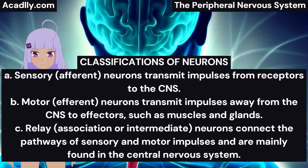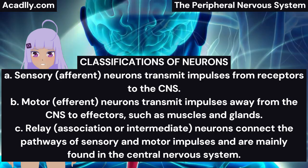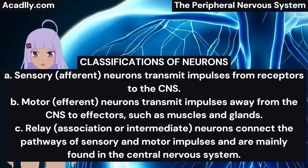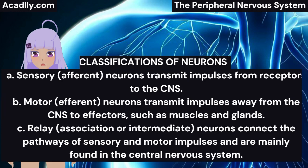Classifications of Neurons. Neurons are commonly classified according to their functions in vertebrates. A. Sensory (Afferent) Neurons transmit impulses from receptors to the CNS. B. Motor (Efferent) Neurons transmit impulses away from the CNS to effectors, such as muscles and glands. C. Relay, Association, or Intermediate Neurons connect the pathways of sensory and motor impulses, and are mainly found in the central nervous system.